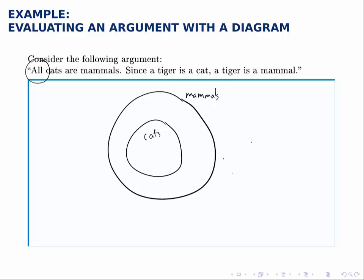Now we look at a specific example where a tiger is a cat, so a tiger goes here, and this argument claims that a tiger is also therefore a mammal.